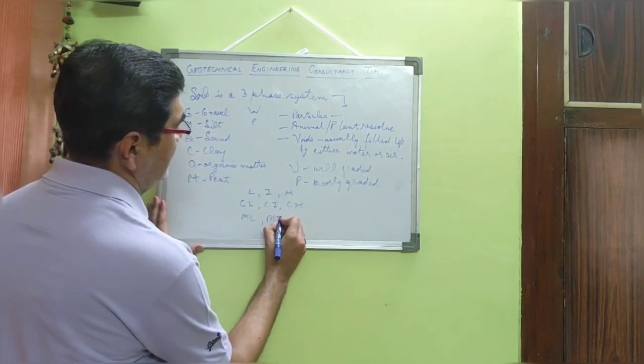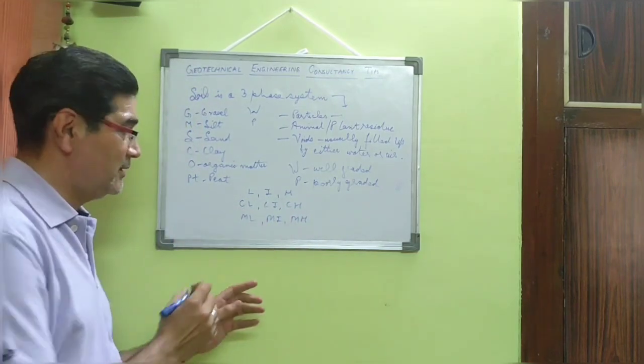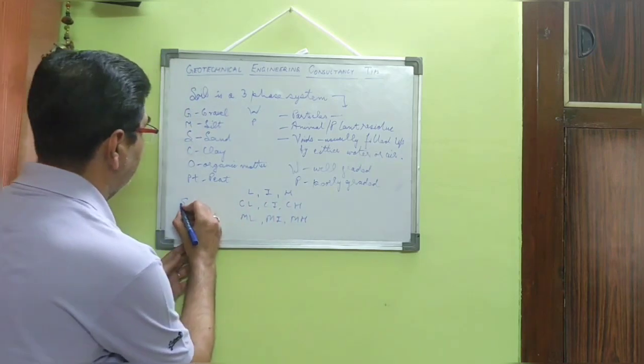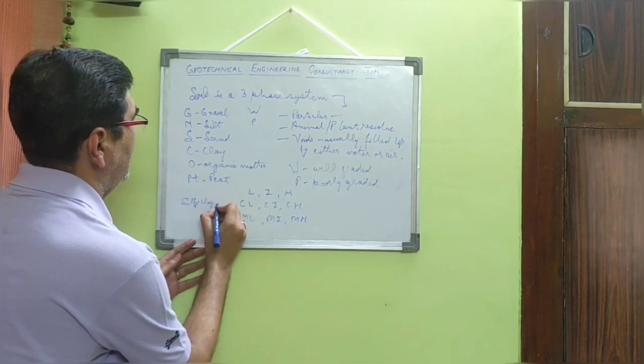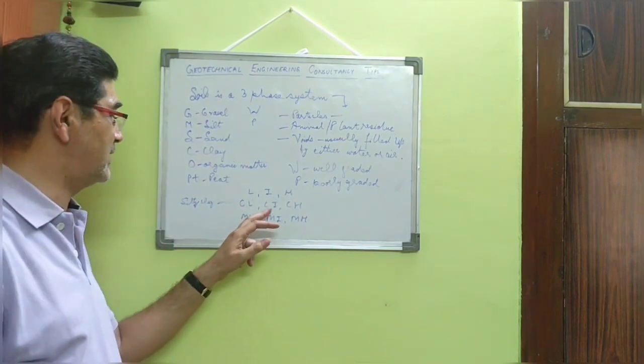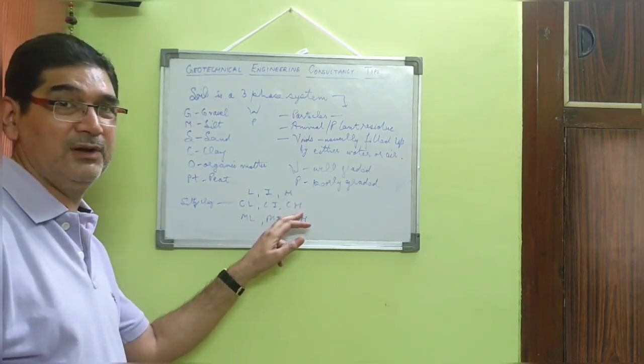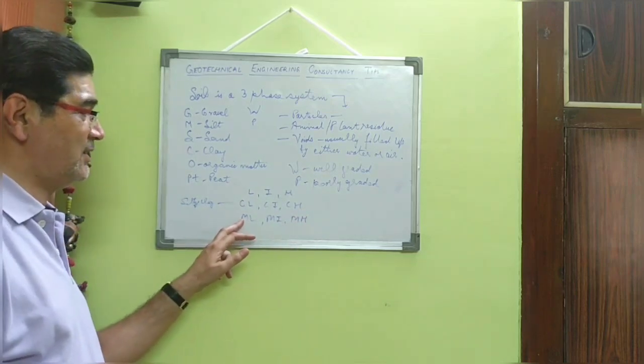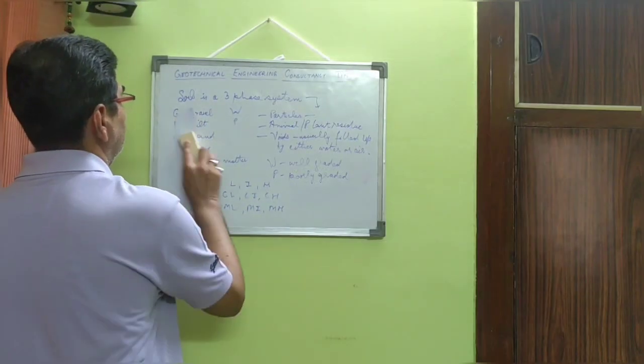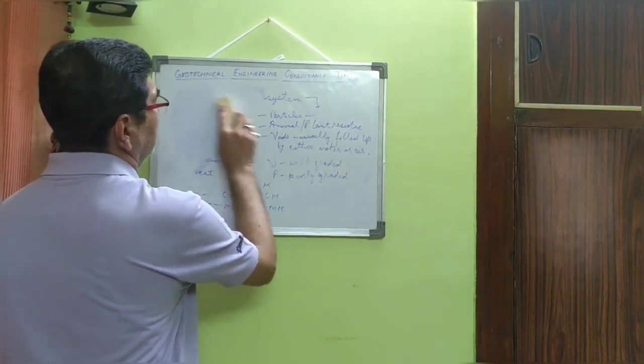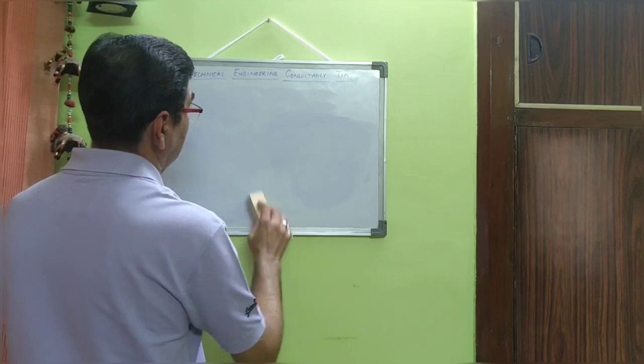ML, MI, MH. So what does this mean? CL means silty clay of low plasticity and compressibility. CI means silty clay of medium plasticity and compressibility, and CH implies silty clay of high plasticity and compressibility. And likewise, this is sandy silt, and it stands for sandy silt.